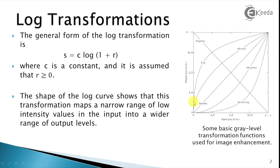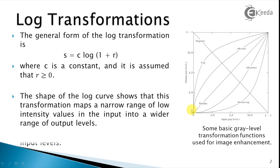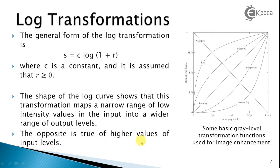The shape of the logarithmic curve shows that this transformation maps a narrow range of low intensity values in the input to a wider range of output levels. We can represent gray levels from 0 to L−1, so a narrow input range of 0 to L/4 maps to a wider output span of 0 to 3L/4, as represented by this particular curve.